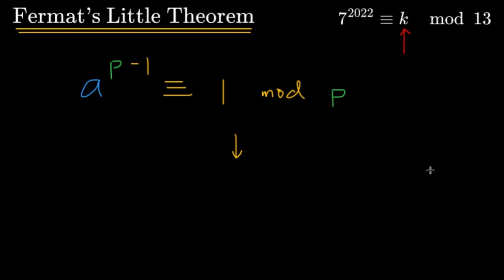We can write the problem as 7 raised to 2022 being congruent to k mod 13. And we just have to find a value of k that is a possible remainder, a possible residue under mod 13. So let's talk about what the Fermat-Little theorem tells us. It tells us that a raised to p minus 1, so a is any integer as the base of the exponent, that's congruent to 1 mod p.